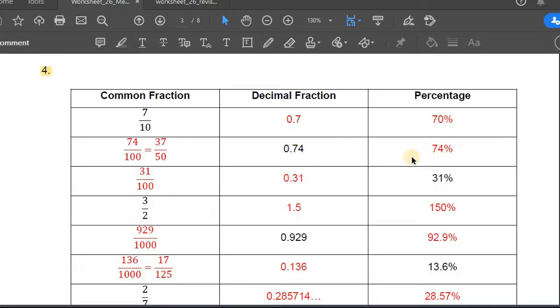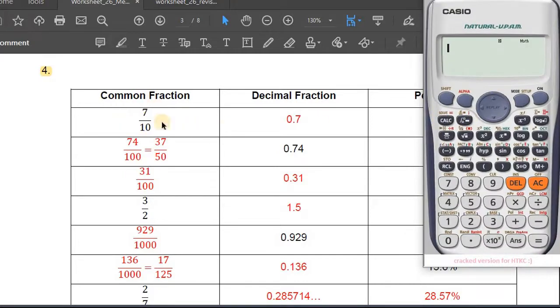So if we want to move from a common fraction to a decimal fraction or a percentage, let's write this here out in our calculator. We've got seven over ten is equal to seven over ten.